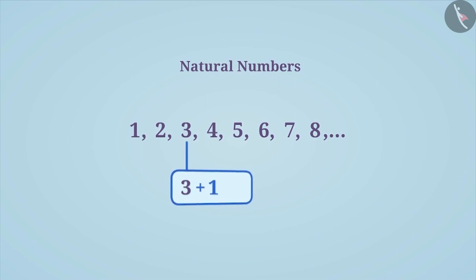If 1 is added to a natural number, then we get the natural number which is next to it. This number is called its successor. For example, successor of 3 is 4 and successor of 4 is 5.